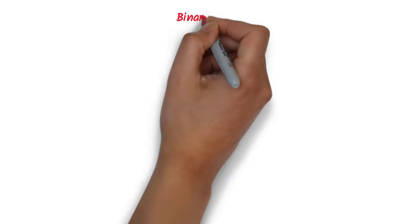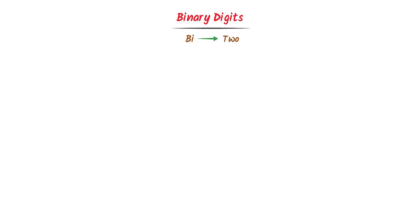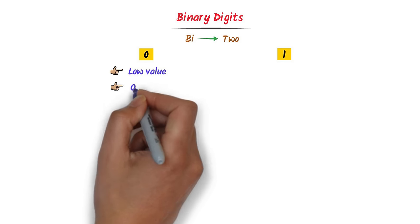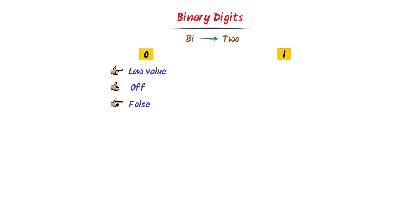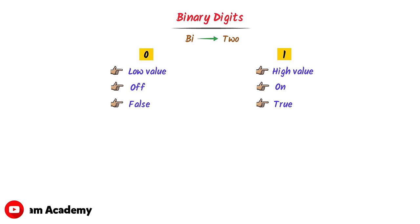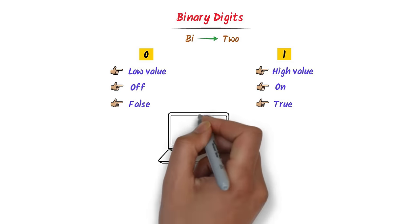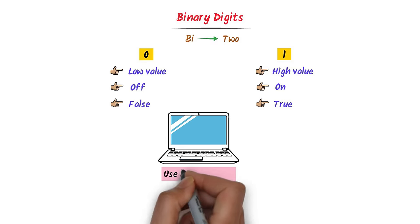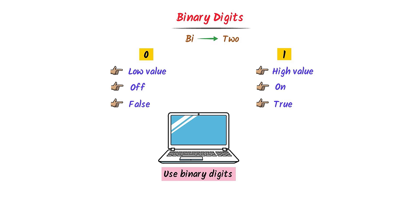Let me teach you binary digits. The word BI means 2. We use only 2 digits, 0 and 1, in a binary system. The digit 0 represents low value or false, while the digit 1 represents high value or true. This is the complete philosophy of binary digits. Every computer uses binary digits 0 and 1.